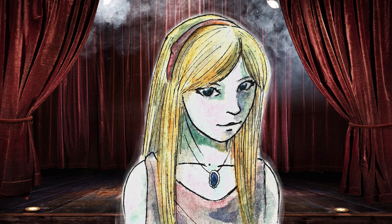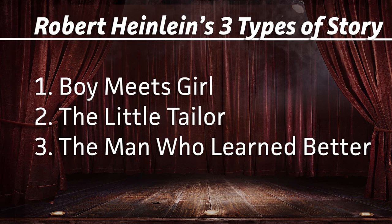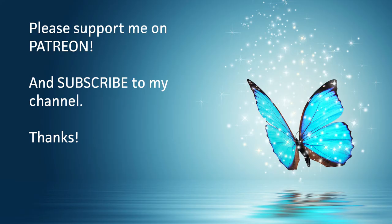So I hope that helped define at least three kinds of relationships your character can have in a story. They can change relationship, change rank or status in relation to other people, or change the idea they hold about the world. And that's all for now.